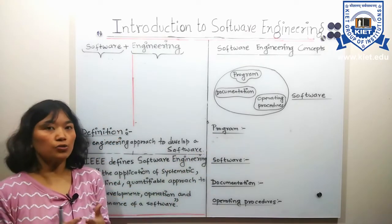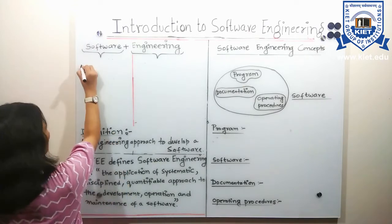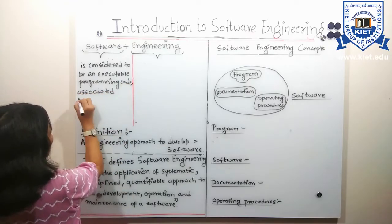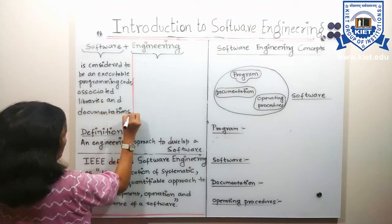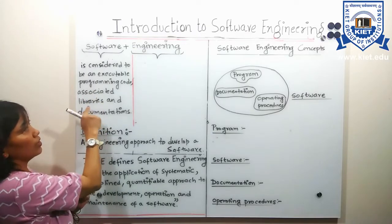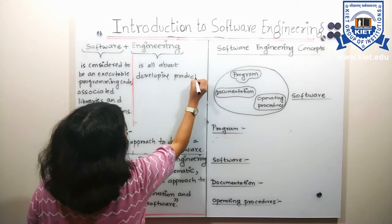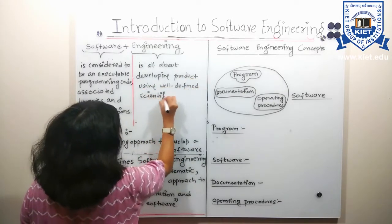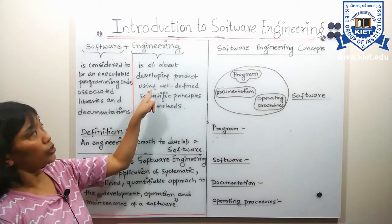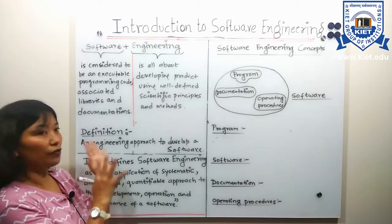Before defining the actual definition, we should know what engineering and software are. Software is considered to be an executable programming code, associated libraries, and documentation. Engineering is all about developing a product using well-defined scientific principles and methods.